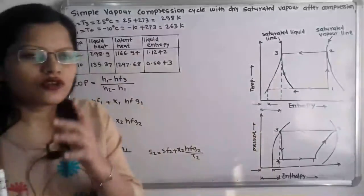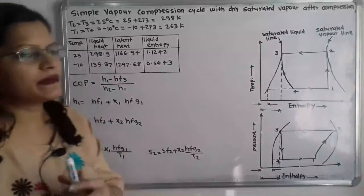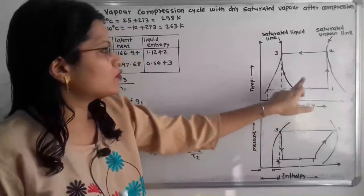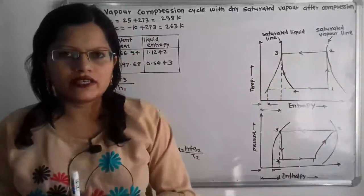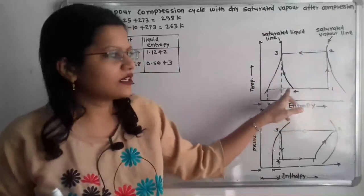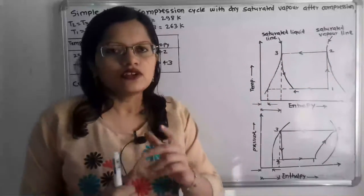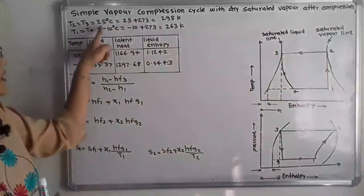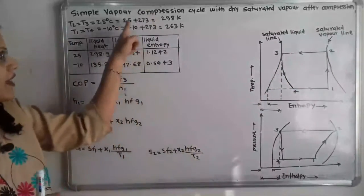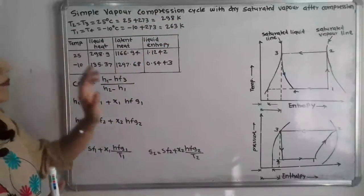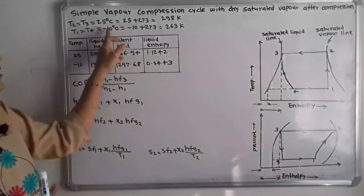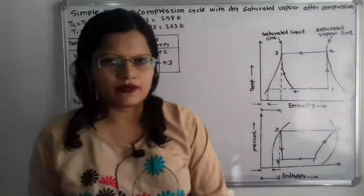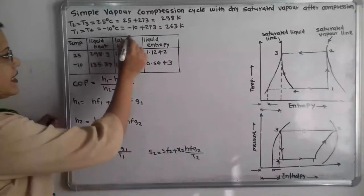Looking at the temperature-entropy diagram, T1 equals T4 and T2 equals T3. T1 and T4 are at the lower temperature level, while T2 and T3 are at the higher temperature level. The higher temperature is 25 degrees Celsius, which equals T2 and T3, converting to 298 Kelvin. The lower temperature limit T1 equals T4 equals minus 10 degrees Celsius, converting to 263 Kelvin.